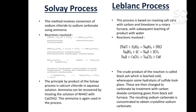The second process is the Leblanc process. This process is based on roasting salt cake with carbon and limestone in a rotary furnace, with subsequent leaching of the product with water. The by-product of the reaction is called black ash, which is leached cold, whereupon some hydrolysis of sulphide takes place.